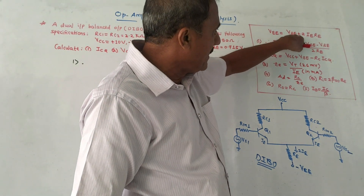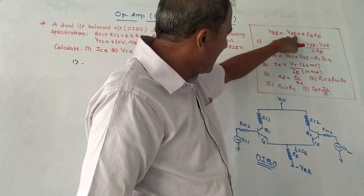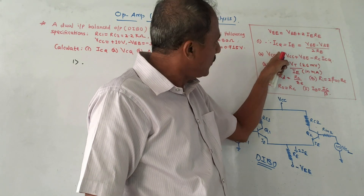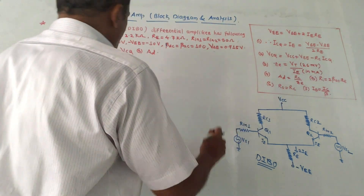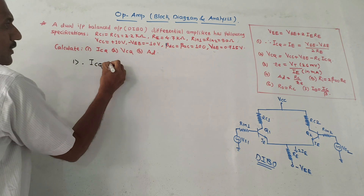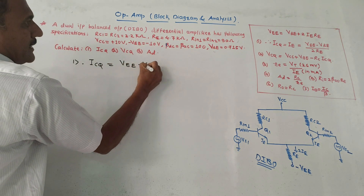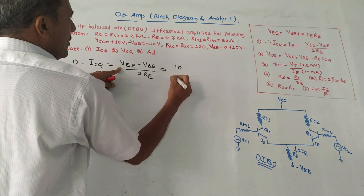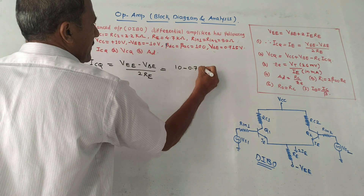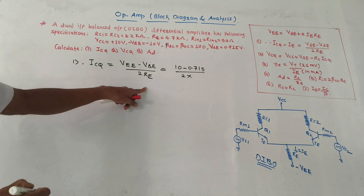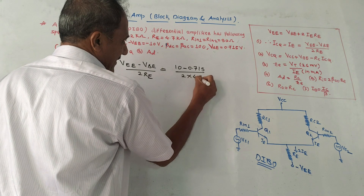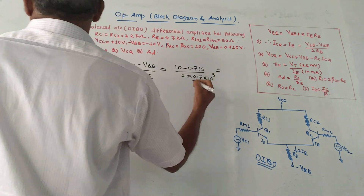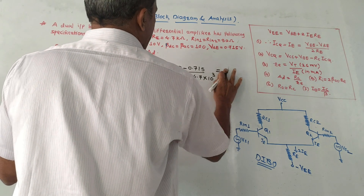First, calculate ICQ. The formula is ICQ = (VEE − VBE) / (2 × RE). Substituting: VEE = 10, VBE = 0.715, RE = 4.7 kΩ = 4.7 × 10³ Ω. Solving this gives ICQ = 0.9877 mA.